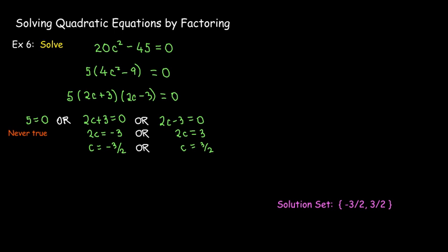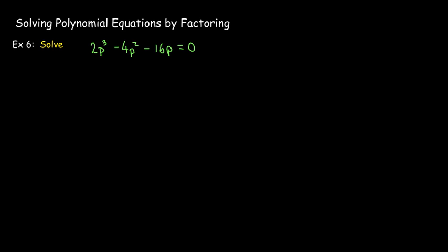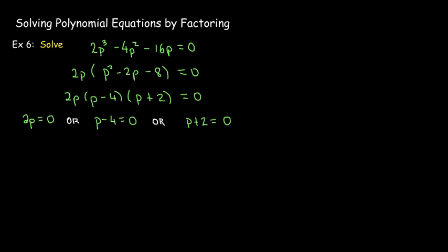Now, here we're getting another preview because we can use this same technique if we can factor a polynomial of a higher degree. This is not a quadratic polynomial. This is a cubic polynomial. But we have a common factor of 2p, and we can factor the quadratic inside the parentheses as p minus 4 times p plus 2. So now here I have three factors and their product equals 0. So at least one of them has to be 0. And in this case, this outside factor is not a constant. It's 2p. So I'll have 2p equals 0 or p minus 4 equals 0 or p plus 2 equals 0.